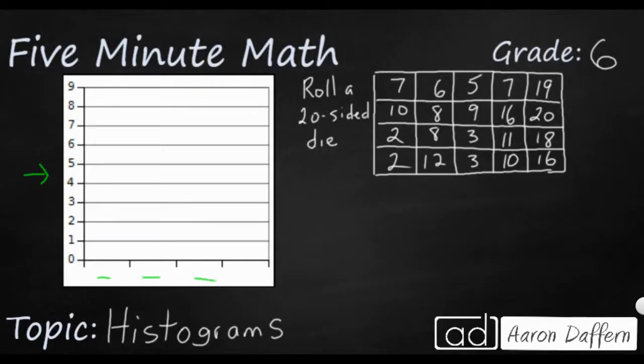The only difference with a histogram and a bar graph is that a histogram is used to show ranges. So we have a lot of data over here on our right. Let's say I had a 20-sided die, and I rolled it 20 different times, and I just recorded my 20 different answers over here in this table. If I wanted to represent that information into a graph, I would probably choose a histogram, because a histogram can let me show how many times I've rolled something within a certain range.